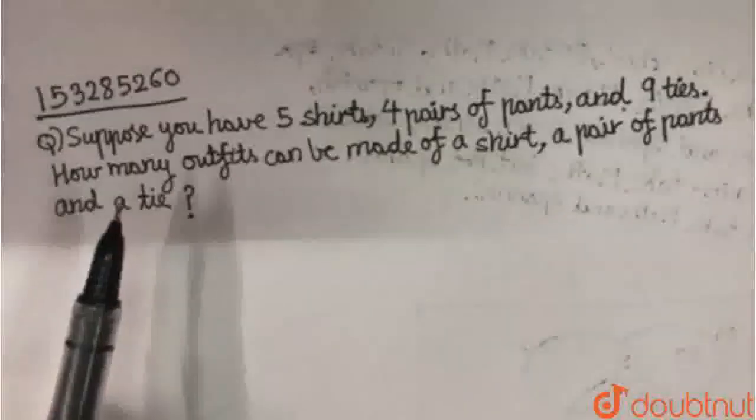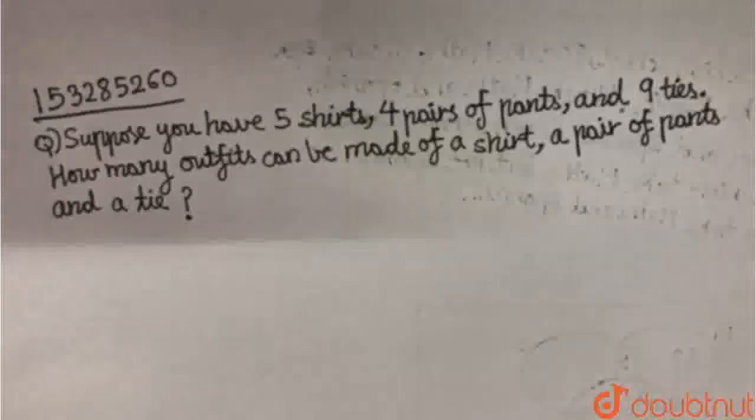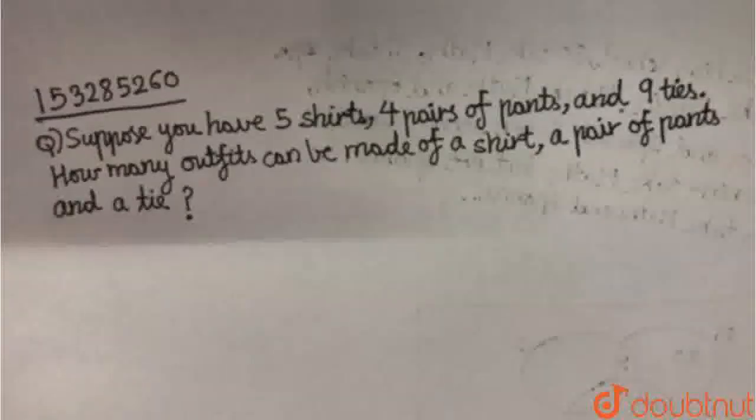So this question says suppose you have 5 shirts, 4 pairs of pants, and 9 ties. How many outfits can be made of a shirt, a pair of pants, and a tie?